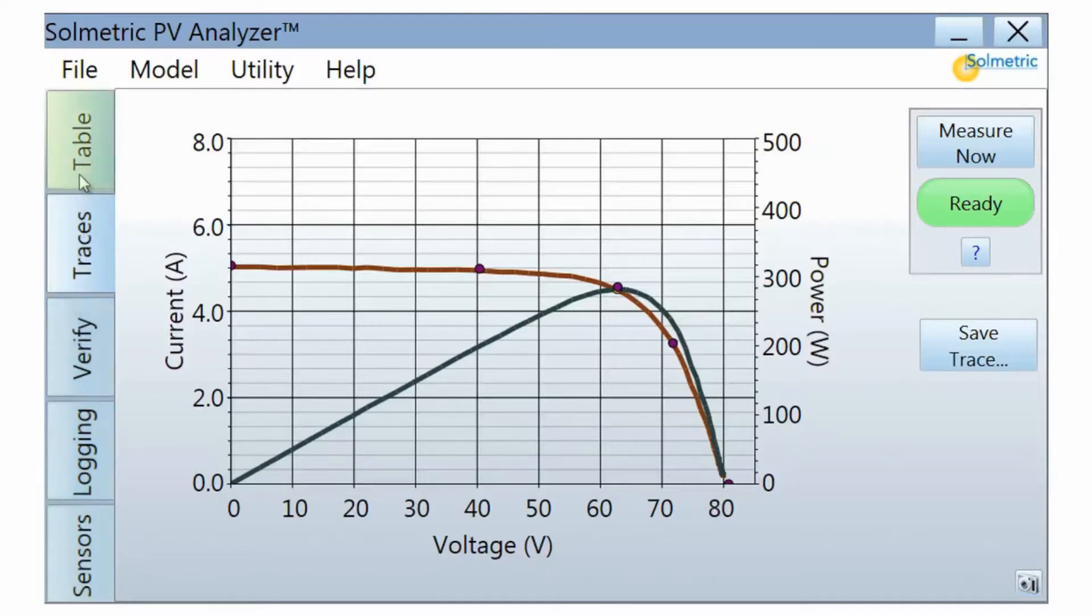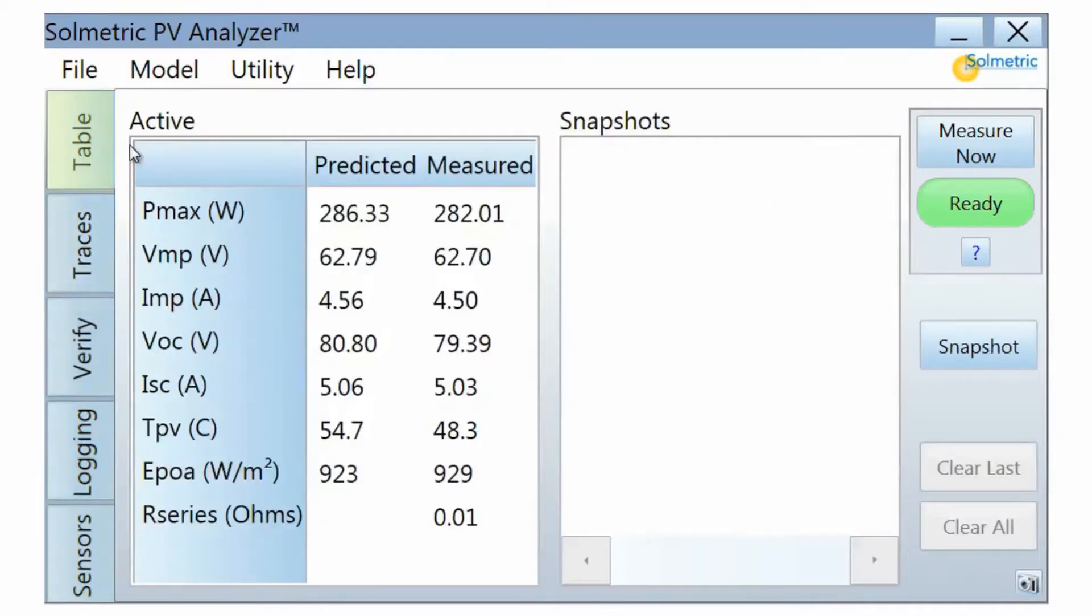The Table tab lists two columns of key PV performance parameters. One column lists the measured values and the other column lists the values predicted by your PV performance model. In addition, measured and predicted temperature and irradiance are shown.